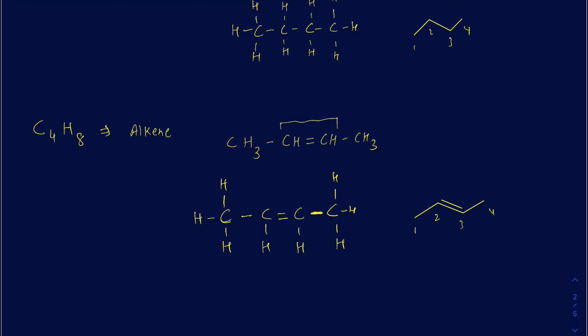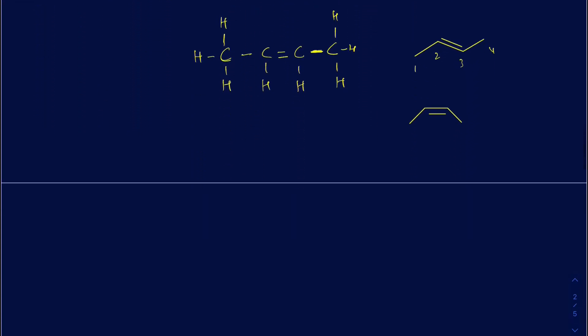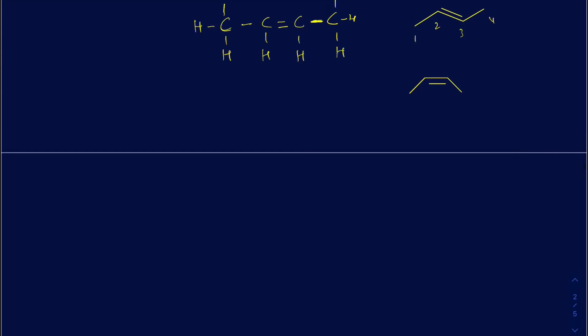You could draw this molecule in different orientations — we'll talk about those differences later. If I have an alkyne, suppose I'm making one from three carbons: the alkyne formula is CnH2n−2, so it's going to be C3H4.